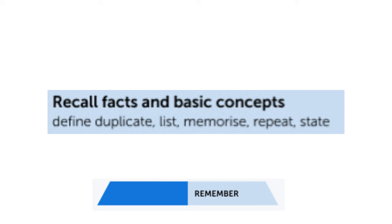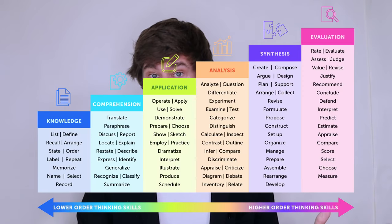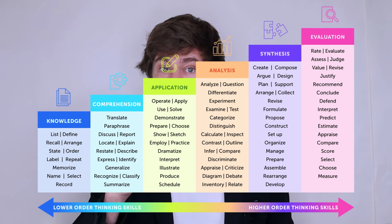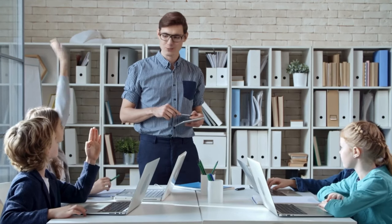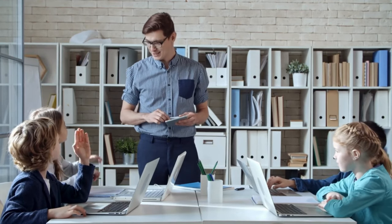Knowledge — Remember. Make students memorize, repeat, list, define, duplicate, and state facts and basic concepts. For ever more effective use of Bloom's Taxonomy in your classroom, design activities that will challenge your students to move from the basic thinking processes to a higher, more complex level of thinking where they'll be able to evaluate and create. To do so, try asking the right questions — questions that will initiate thinking at a particular cognitive level by using the appropriate verbs.